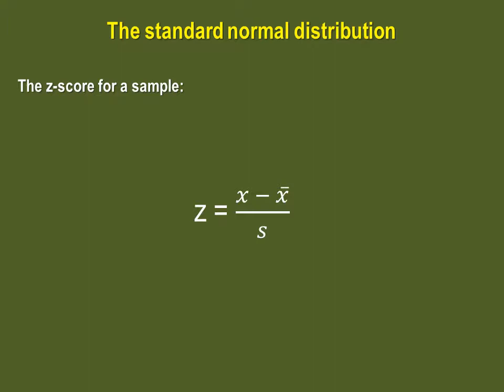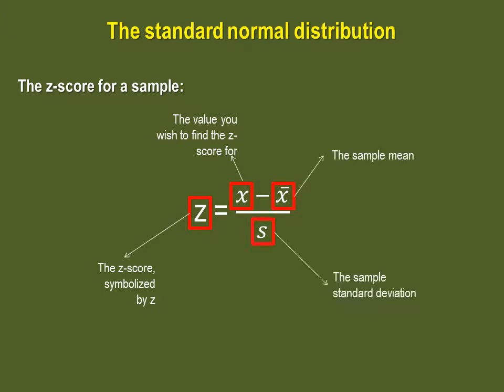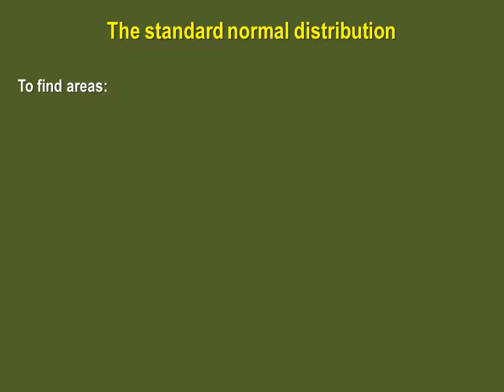Here's a reminder on how to calculate the z-score. Again, you have the z-score, which is symbolized by z. You have x, the value you wish to find the z-score for, to which you subtract the sample mean, and you divide the result by the sample standard deviation. Remember you can calculate z-scores for a population as well. Just make sure you use the appropriate equation.